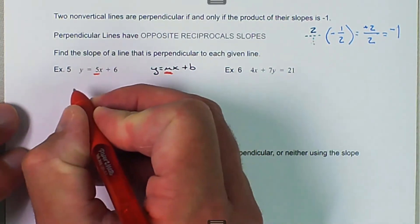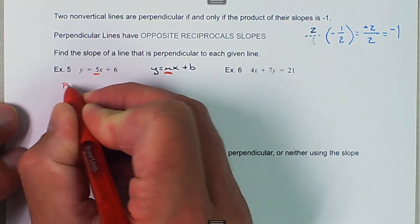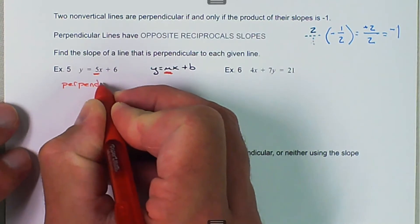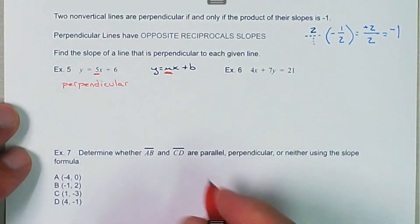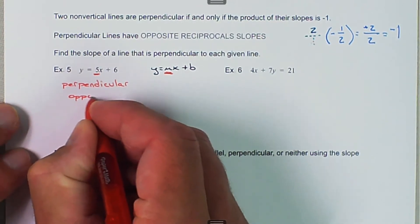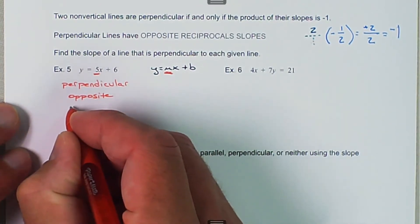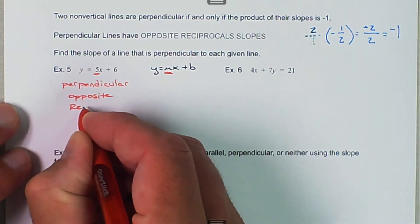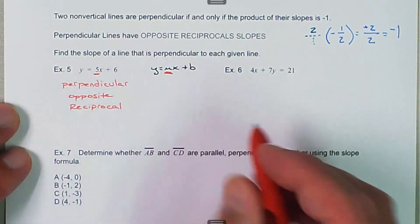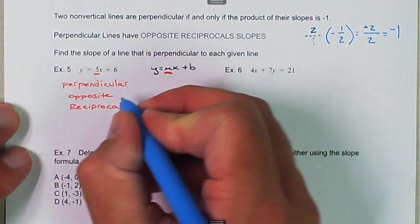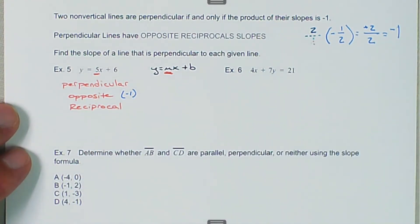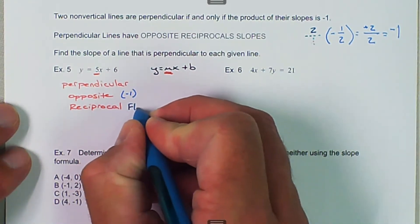So perpendicular means opposite and reciprocal. Opposite basically means we take the given slope and we're going to multiply it by negative one. And reciprocal means flip, flip the fraction.